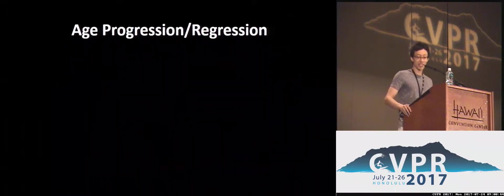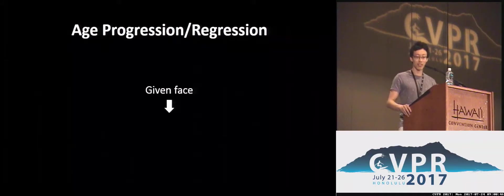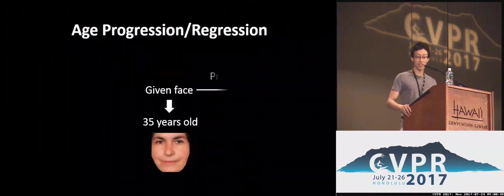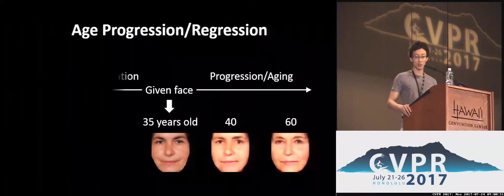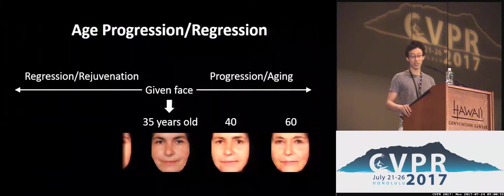Let's start with an example. Given the face of a 35-year-old, progression will generate older faces, and regression will generate younger faces.